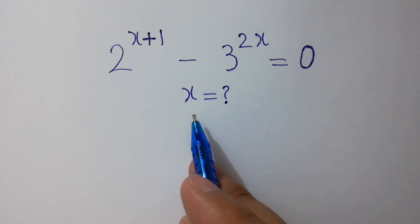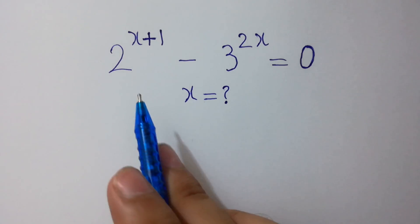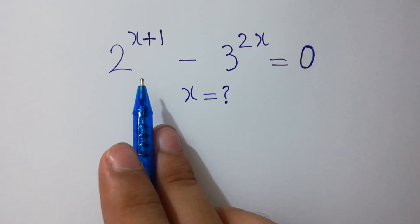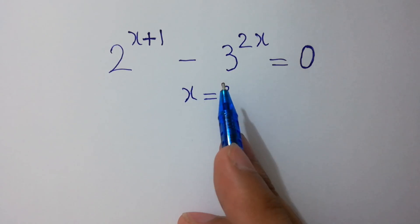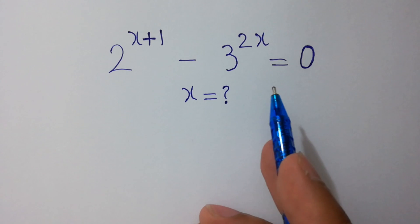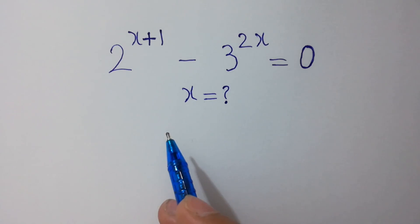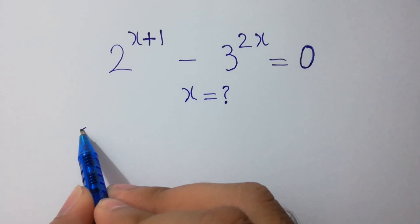Hello friends, find the value of x if 2 to the power x plus 1 minus 3 to the power 2x equals 0. This is an interesting question. Let's solve it.